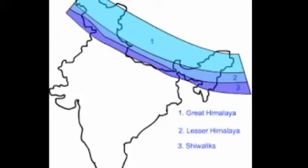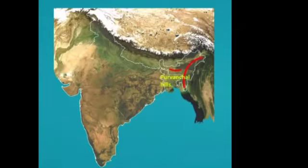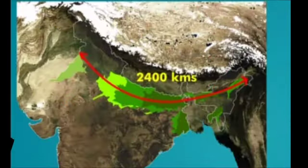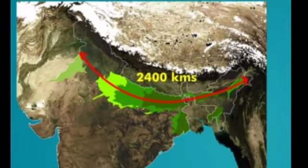The Shivaliks comprise the outermost range of the Himalayas. The last sub-division is the Purwanchal Hills, also called the eastern hills because they are located in the eastern part of India and run in the shape of a crescent. Now let us learn about the second physiographic division: the Great Northern Plains.